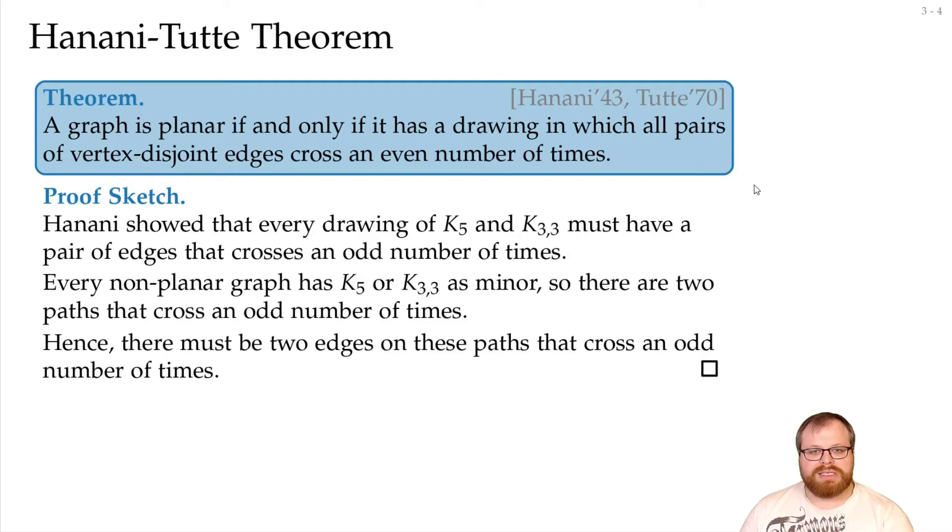Following from this, it seems like we can get rid of many crossings. So if we have a non-topological drawing, then we can take any pairs of edges that cross at least twice and remove two crossings, and do that until every edge is crossed only once.